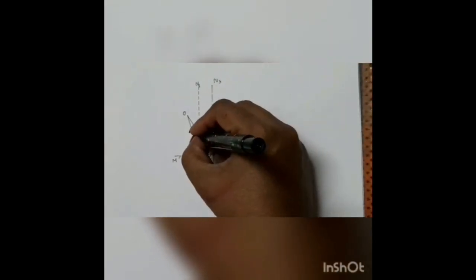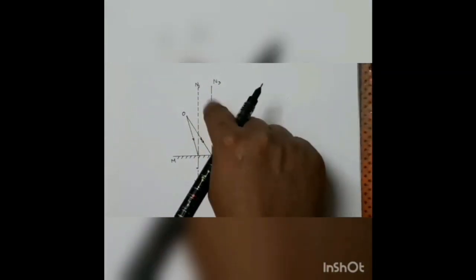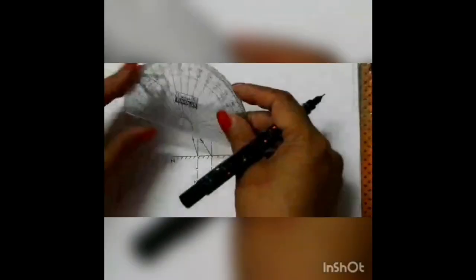Let them be N1, N2, N3, N4. Now we'll measure the angle of incidence. The angle of incidence is the angle between the incident ray and the normal, and the second incident ray and the normal. So we'll measure these angles.